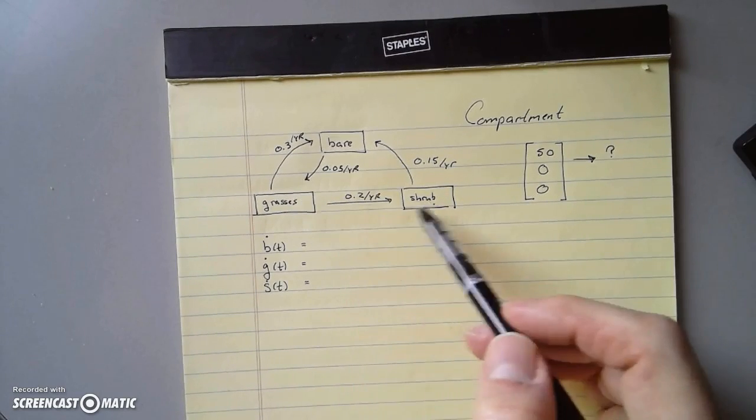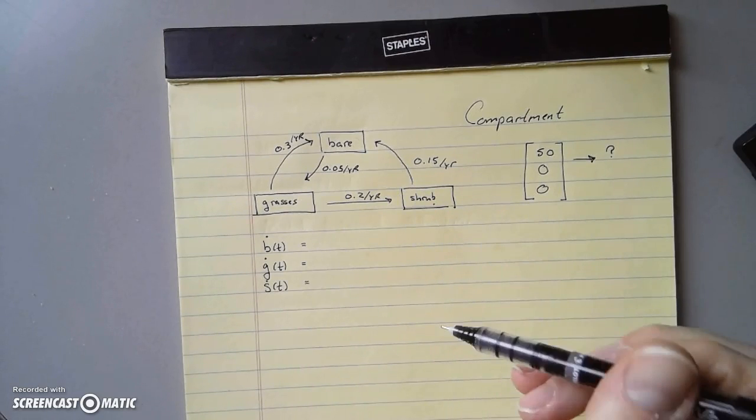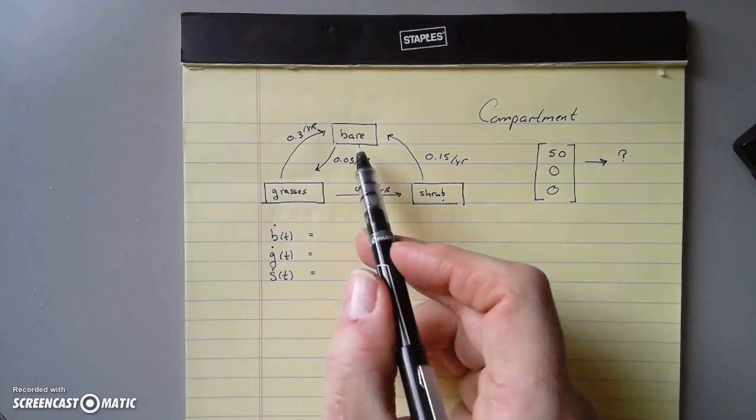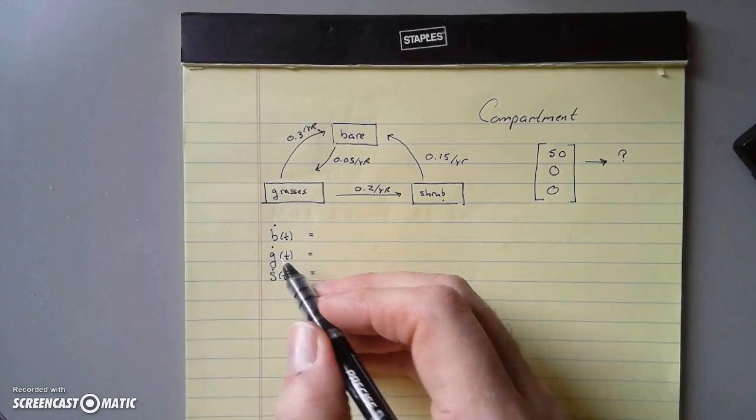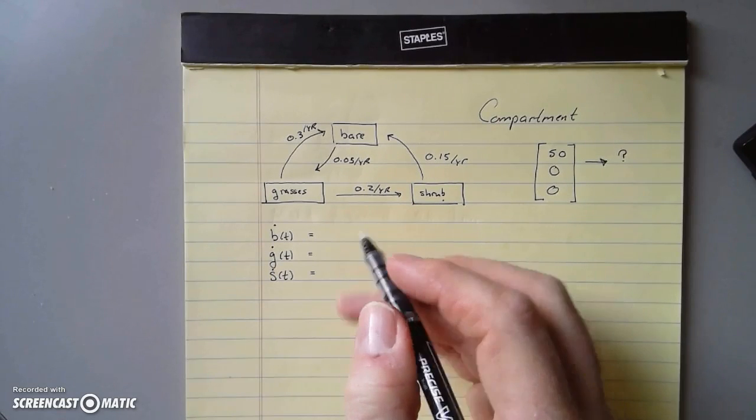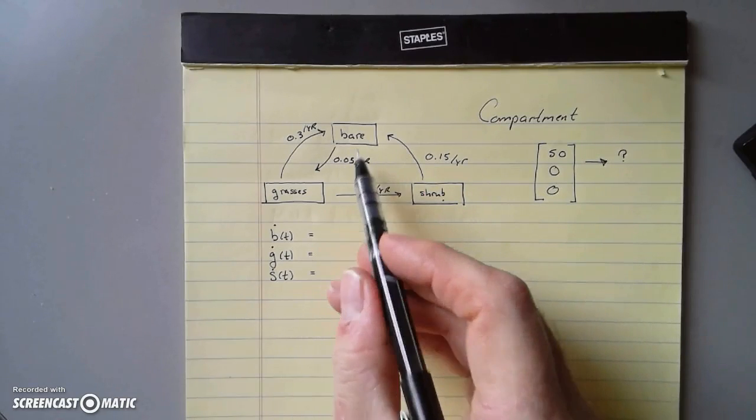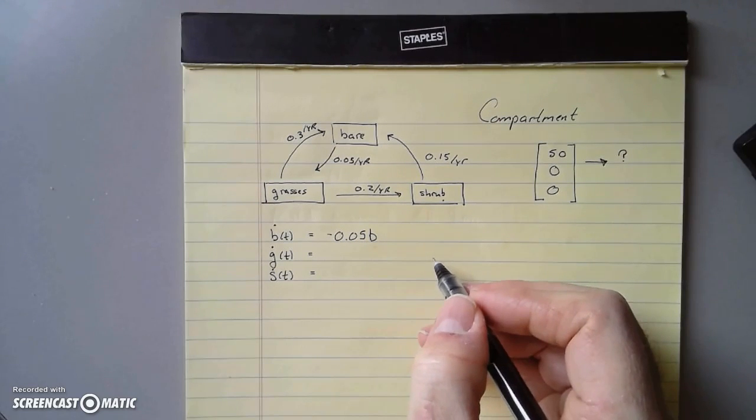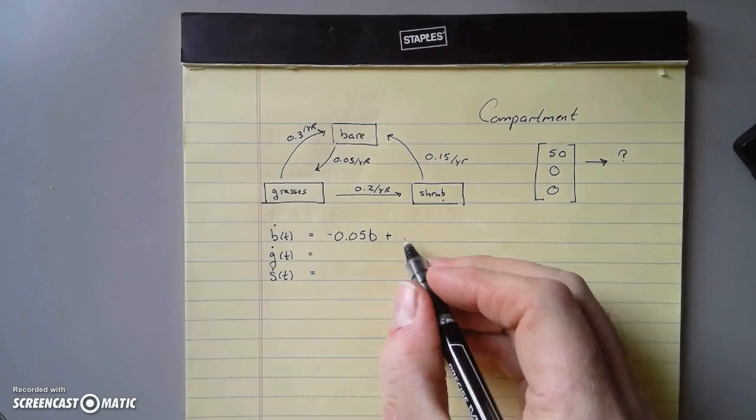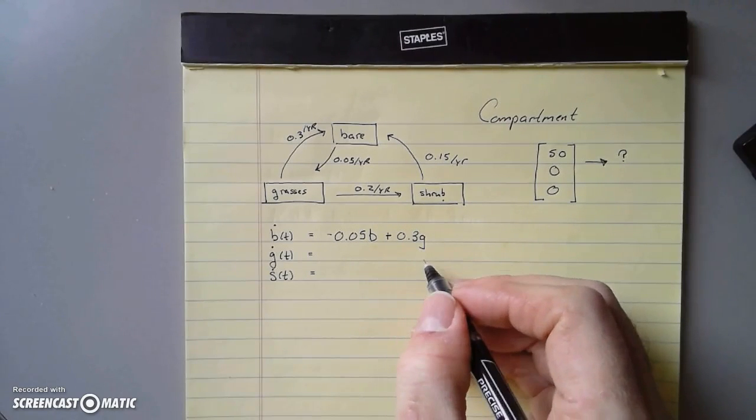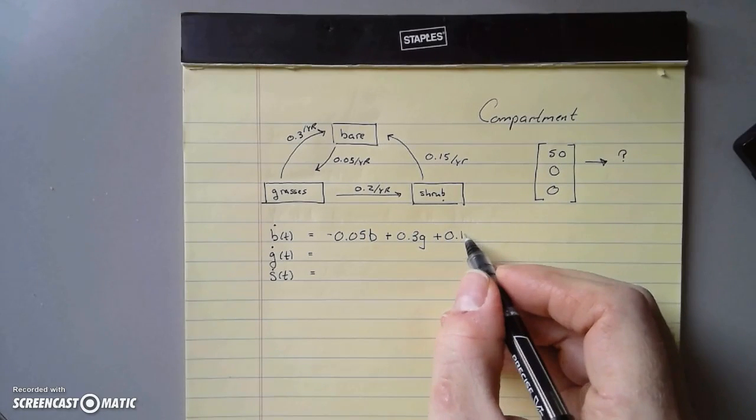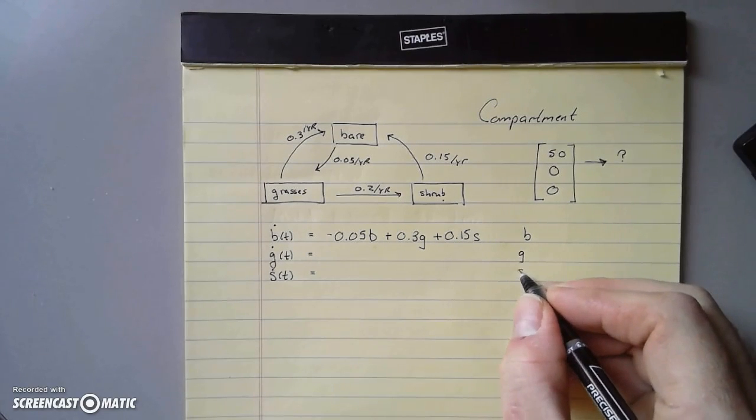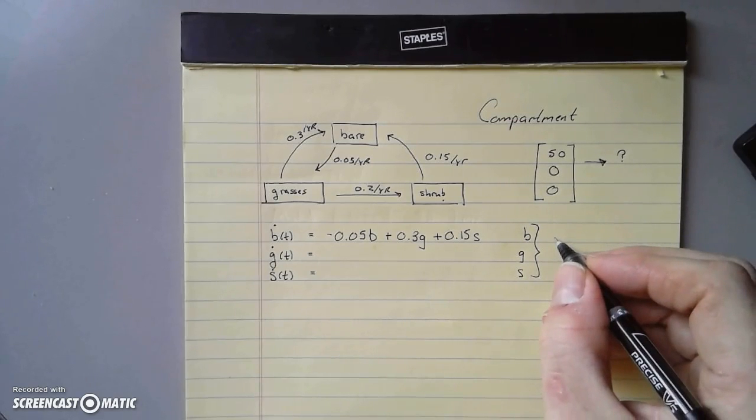The thing being passed around here is area. The way we make our differential equations is similar to what we did with mixing problems. Look at the bare ground - B dot is the change in bare ground per time. We're losing 5% of bare ground per year, but we gain 30% of grassy ground and 15% of shrub ground. These functions are the area held by bare ground, grassy ground, and shrub.